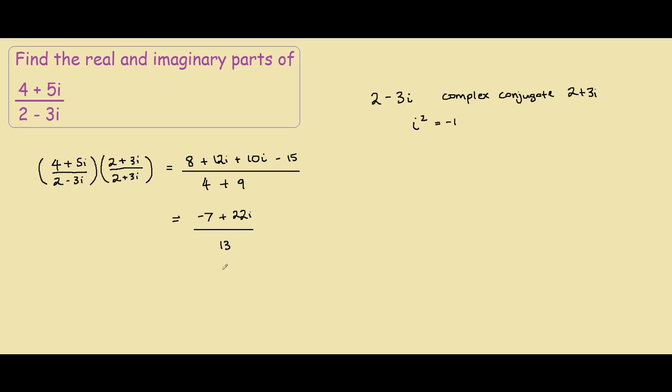So, now if we want to split up into our real and imaginary parts, we have the real part equals negative 7 over 13, and the imaginary part equals 22 over 13. When we consider the imaginary part, we don't consider the i. We just look at the term here. And that's our answer.